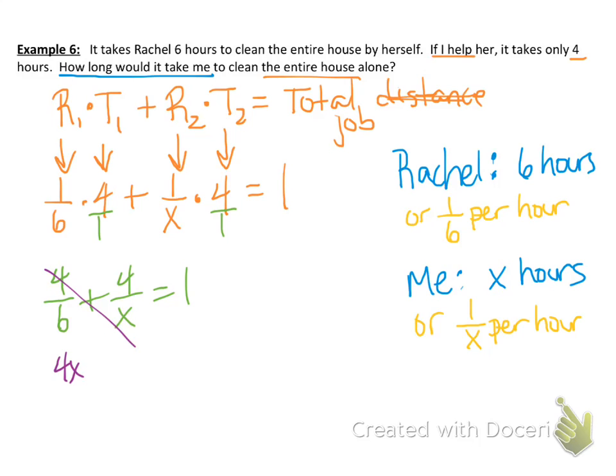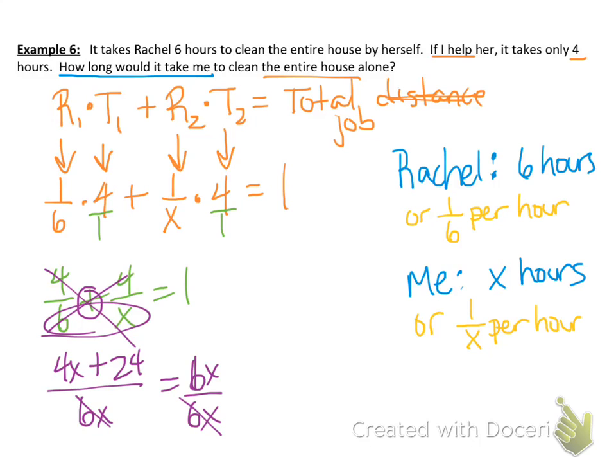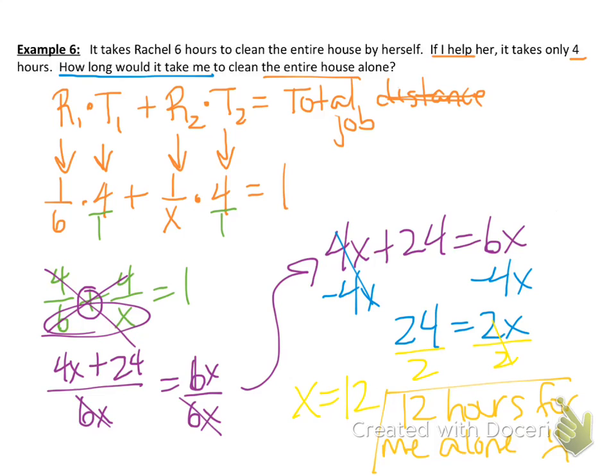So multiplying, we get 4x plus 24 over 6x equals one. Well, it's easy enough to write one as 6x over 6x. And if we were to multiply both sides by 6x, our denominators would cancel. So we end up with an equation of 4x plus 24 equals 6x. Solving this for x, we end up with x equals 12. So it would take 12 hours for me to clean the house by myself.